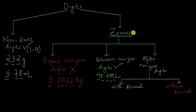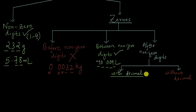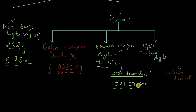Finally, zeros that come after non-zero digits have two situations. The first situation is that there is a decimal in the number — if so, those zeros are significant. For instance, 521.00 centimeters has five significant digits: 5, 2, 1 are non-zero, and both trailing zeros are significant because there is a decimal. Similarly, 491.30 grams also has 5 significant figures — all of them are significant.